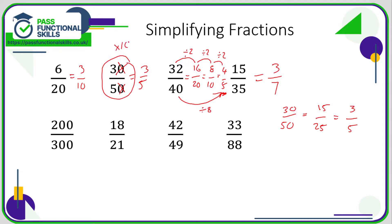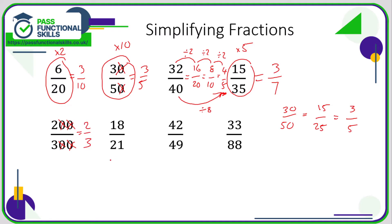So far we've seen: if they're in the ten times table it's very easy to spot; the five times table is quite easy to spot; and if they're even numbers they're obviously in the two times table. This next example — divide by ten, then divide by ten again. In other words, we've divided top and bottom by a hundred, just chopping off the same number of zeros top and bottom. That simplifies to two thirds.